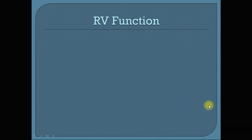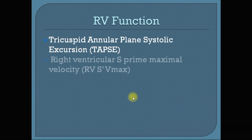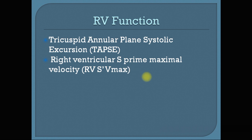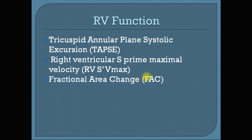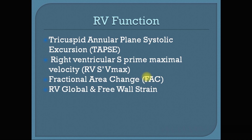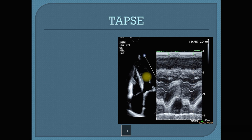How can we assess the right ventricular function? We have many tools that we can use. First, we have the Tricuspid Annular Plane Systolic Excursion, or TAPSE, the most commonly used method. Second is the right ventricular S' maximal velocity, or RVS' Vmax. Third is the fractional area change, which is less commonly used. And the fourth one, which I am a big fan of, is the right ventricular global and three-wall strain.